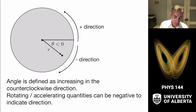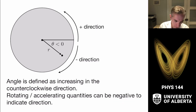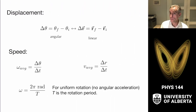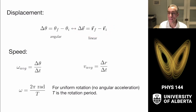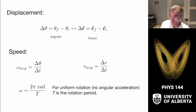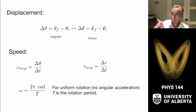We also use negative signs for the angular equivalents of velocity and acceleration. The angular displacement is the difference in angle from one angle relative to the initial — equivalent to displacement in linear quantities. We take the angle at the end minus the angle at the beginning, and that's our angular displacement.